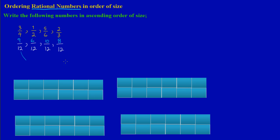On the first diagram I'm going to represent nine out of twelve. On the second diagram I will be representing six out of twelve. On the third diagram I will be representing ten out of twelve. And on the fourth diagram down here I will be representing eight out of twelve.